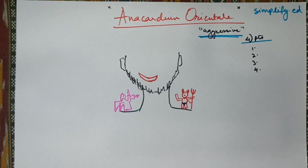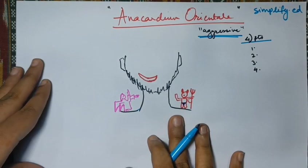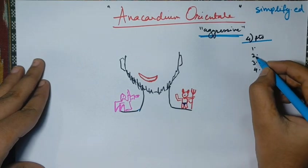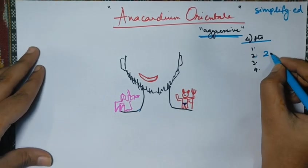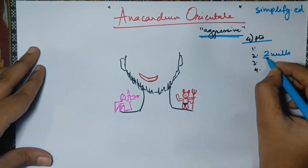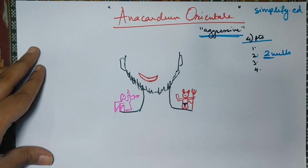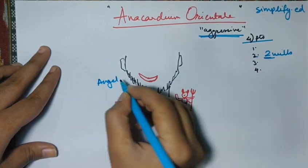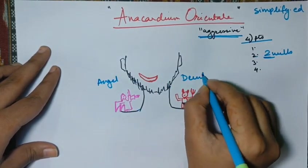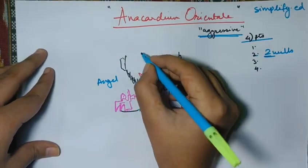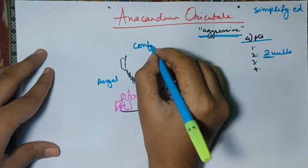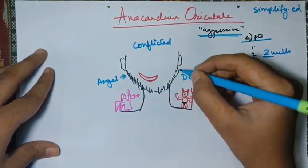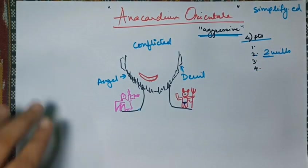Now what is characteristic about Anacardium? The first point, which I would put it as second point, which is two wills. So the person has an angel perspective on views and a devil perspective on views. The person is always in his head conflicted. There is an angel telling him to do things in one ear and devil telling him to do things in another ear.